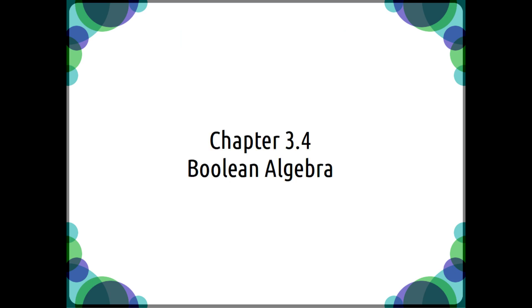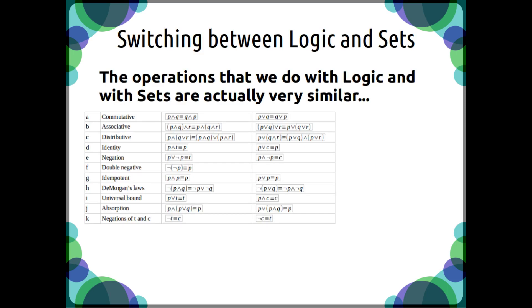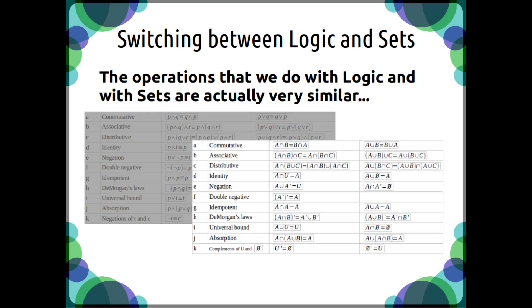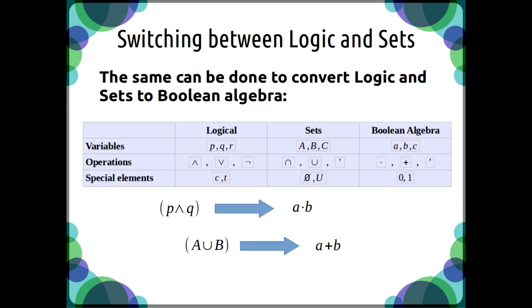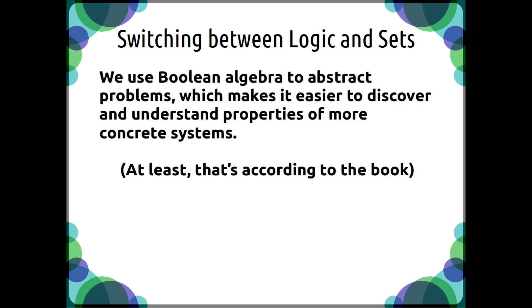For chapter 3.4 on Boolean algebra, we're also keeping it pretty simple. The operations that we do with logic and with sets are actually very similar. We can actually convert a logic expression to a set expression, and vice versa, by swapping specific parts. The same can be done to switch logic and sets to Boolean algebra. According to the book, we use Boolean algebra to abstract problems, which makes it easier to discover and understand properties of more concrete systems.